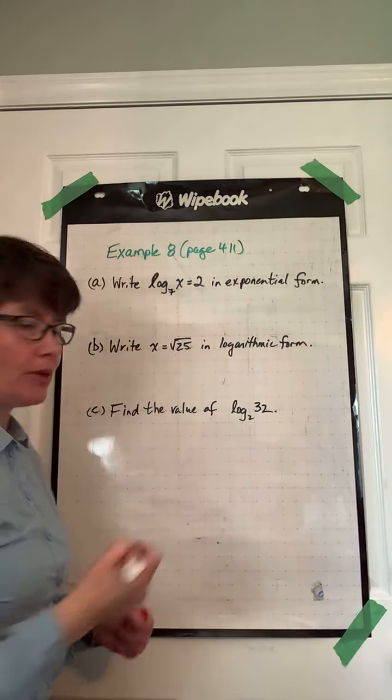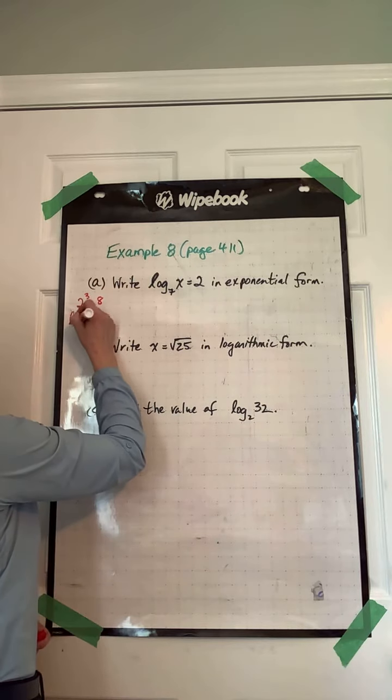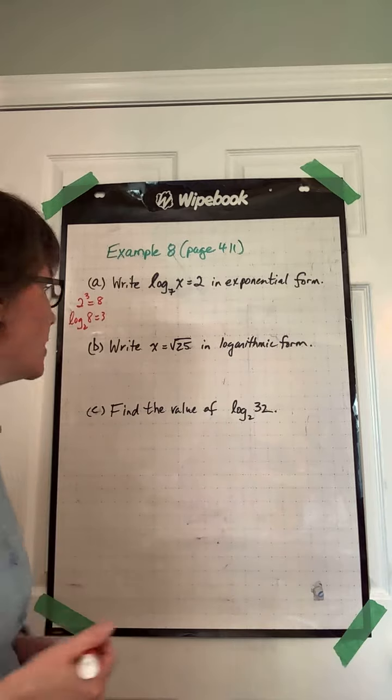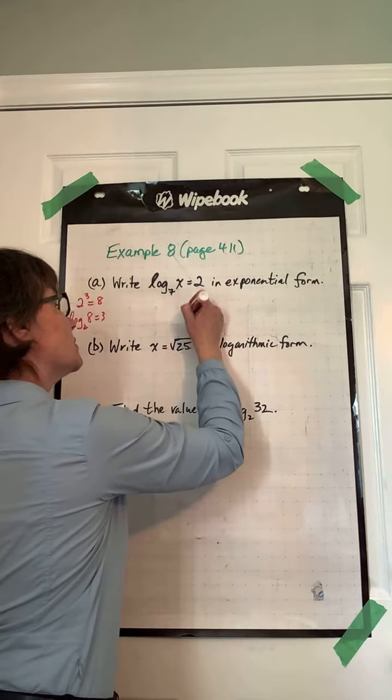I always remember the 2 cubed equals 8 thing can be changed into log base 2 of 8 equals 3, so if you want to do that that's fine as well, or you can just remember that the base is the base, so 7 is the base.